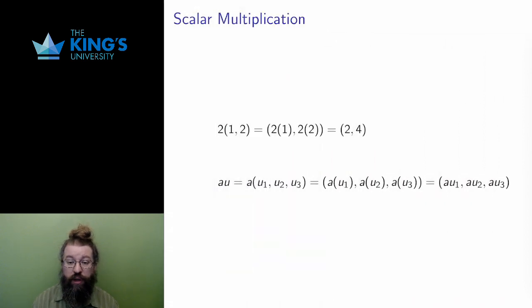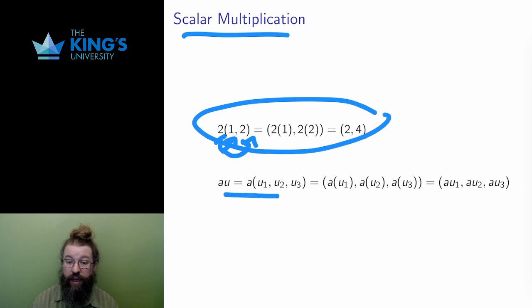Vectors can be multiplied by scalars by multiplying each entry in the vector by the same scalar. Here is an example in R2 and, again, the general formula in R3. The scalar A is multiplied by each entry u1, u2, and u3. This operation is called scalar multiplication.